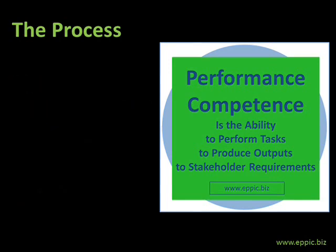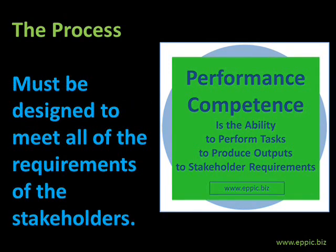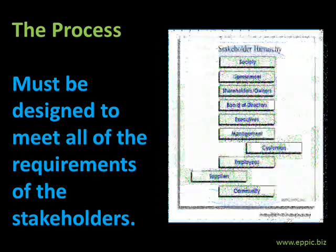The process must be designed to meet all of the requirements of all of the stakeholders. Stakeholders vary enterprise by enterprise. This stakeholder hierarchy example, for illustrative purposes only, shows a hierarchy of stakeholders. While it shows customers leading to the right, the customer in this case is not the king of the stakeholders. If the customer wanted you to violate some governmental law or regulation, that would not be right. That would not be good for the enterprise to do so, to meet those customers' demands.